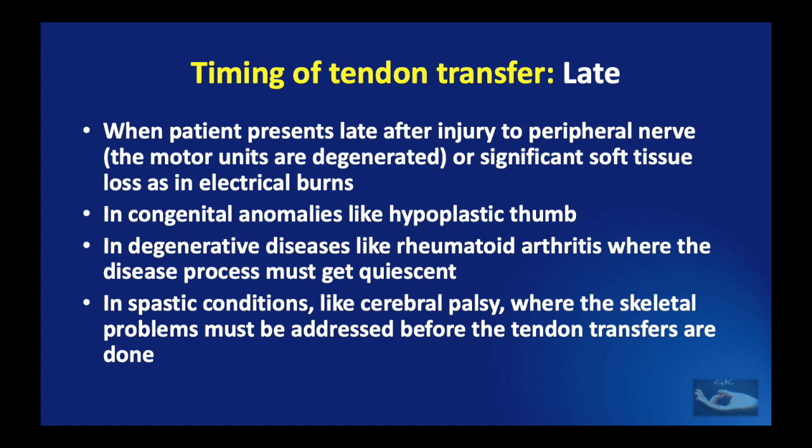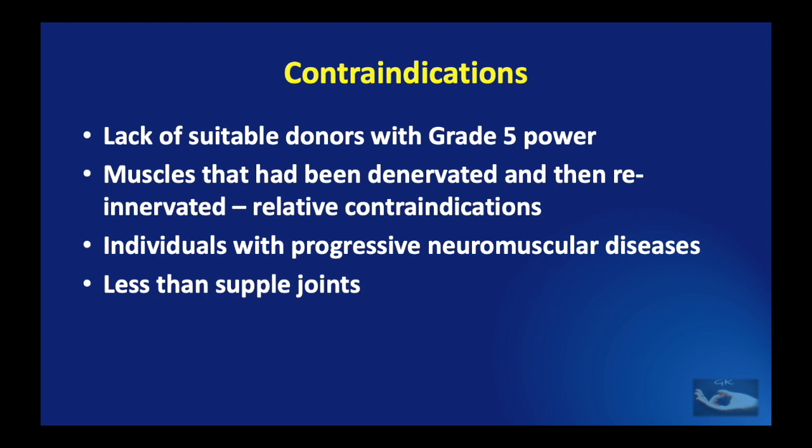We must remember that there are certain contraindications for tendon transfers: lack of suitable donors with grade 5 power; muscles that have been denervated and then re-innervated cannot be used as donors; individuals with progressive neuromuscular diseases and less-than-supple joints are relative contraindications.